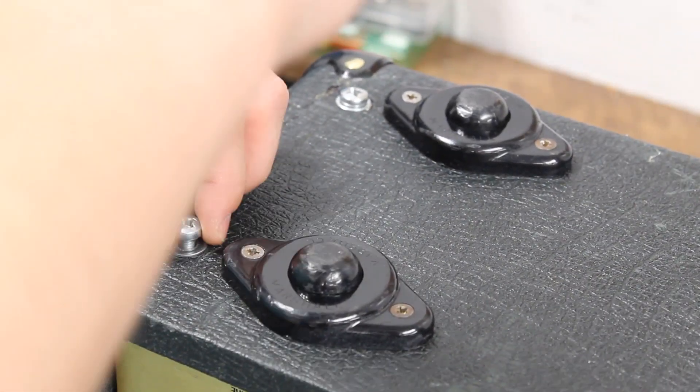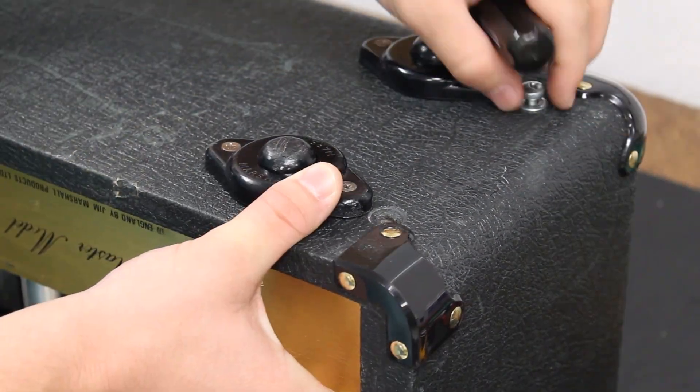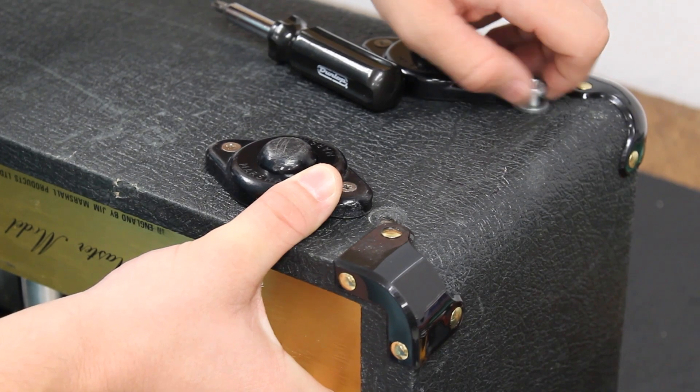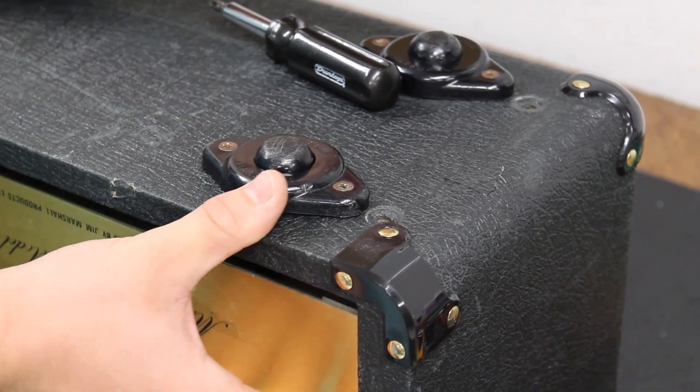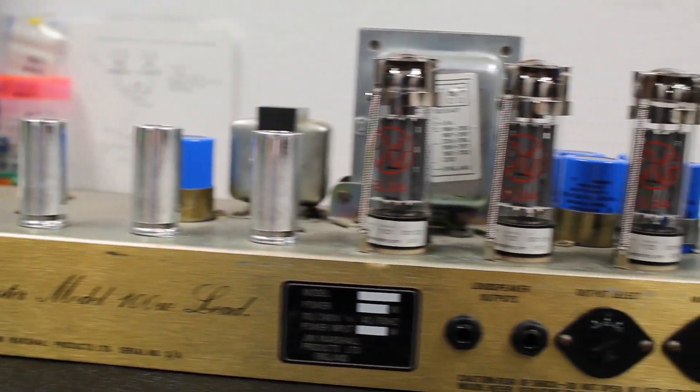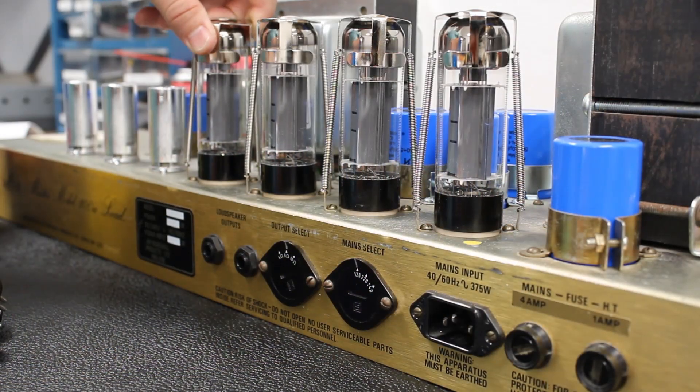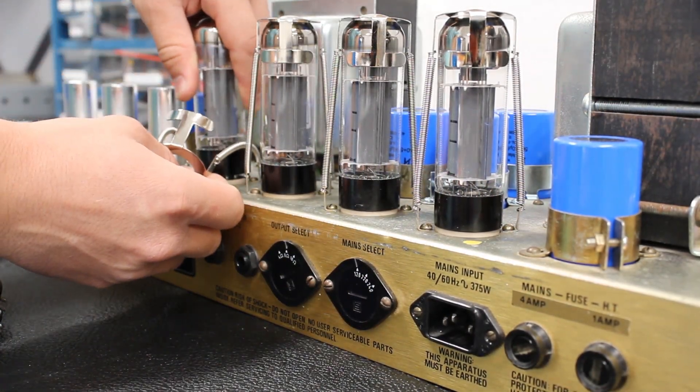During disassembly, stay clear of exposed circuitry as electrolytic capacitors can hold a charge long after the amp has been turned off and unplugged. Once this is complete, remove the power tubes in your amp.